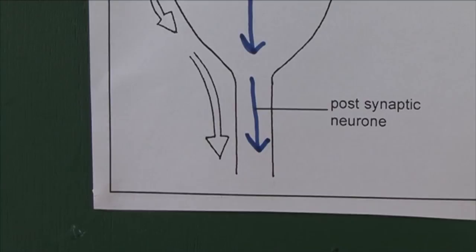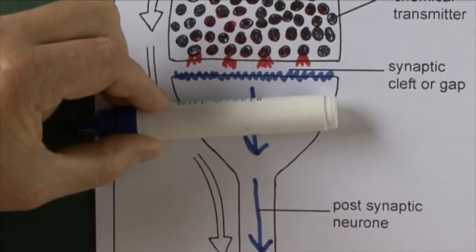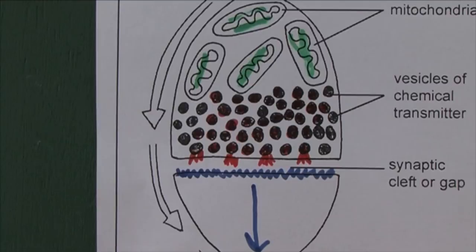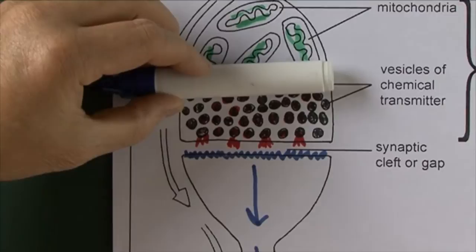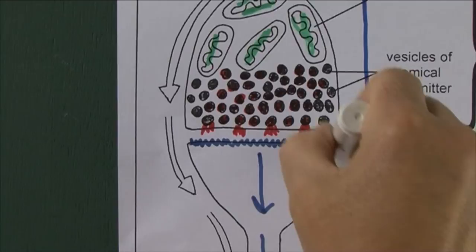The synapse acts as a valve — it ensures one-way flow. It can go from the presynaptic to the postsynaptic, but not the other way. Should an ectopic impulse arise and try to go the wrong way, it can't, because there's no chemical transmitter on the postsynaptic side and no receptor molecules on the presynaptic side. So it can only go from presynaptic to postsynaptic, ensuring one-way flow around the nervous system.